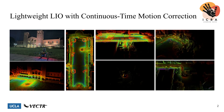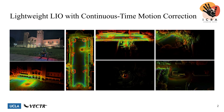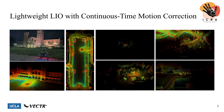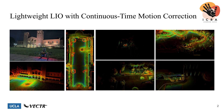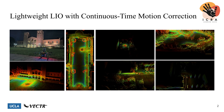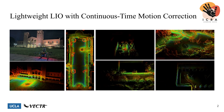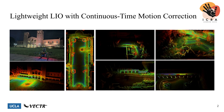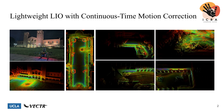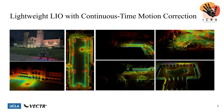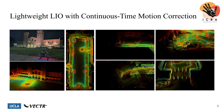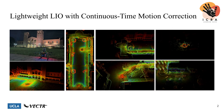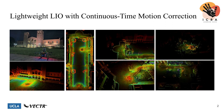Aggressive motions from agile flights or traversing irregular terrain can induce motion distortion in LiDAR scans that degrade state estimation and mapping. While some methods exist to mitigate these effects, they're still too simplistic or computationally costly for resource-constrained mobile robots.